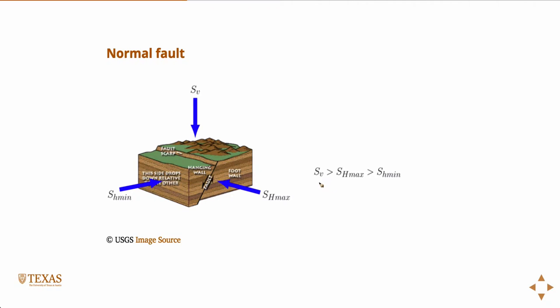So in a normal faulting regime, the vertical stress is the maximum. Now remember, in a normal faulting regime, the hanging wall moves down in a direction normal to gravity - in the same direction as gravity, the hanging wall moves down. And so the vertical stress being a maximum accommodates that motion. You can almost think of the vertical stress being the maximum, so it's pushing the hanging wall down, accommodating that motion.